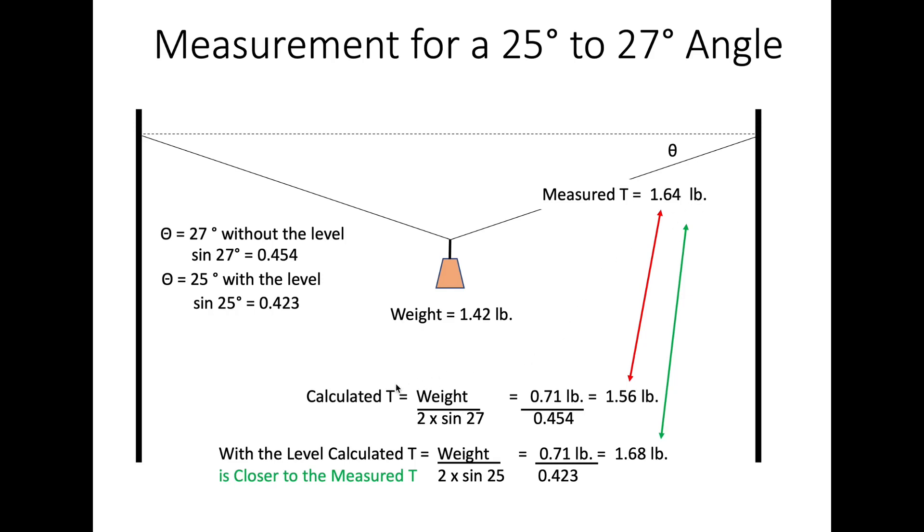Okay. The weight again was 1.42. We measured 1.64 pounds. The calculated tension without the level was 1.56, a little lower than the 1.64. We got the straight line across there. Eliminated the sag. Put the level. We got sine 25. And we end up, due to calculation, we got 1.68. Closer to our measured number, so we're going to live with that. So, we'll go on and do one more.